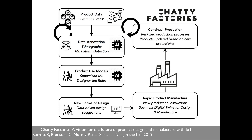Project two is called Chatty Factories — a collaborative project between Cardiff, Edinburgh, Lancaster, Essex, and Nottingham. It looks at how we might think about manufacturing in the future. Rather than the idea that the designer knows exactly what the product should be, because it's now relatively easy to put sensors into objects, we can look at the way things are actually used in practice — collecting in-the-wild usage data to develop design insight, which is then fed back into the factory for rapid manufacturing changes, closing the loop between ideas of what things should be and actually making stuff that lives up to that.